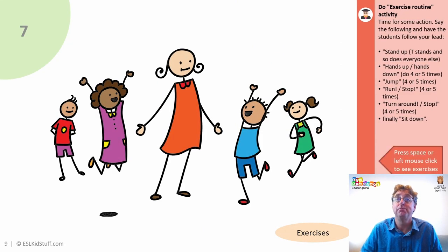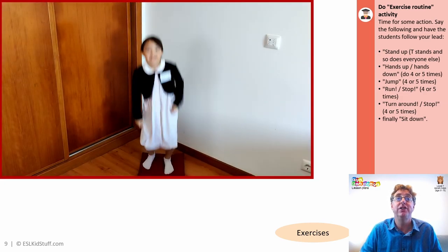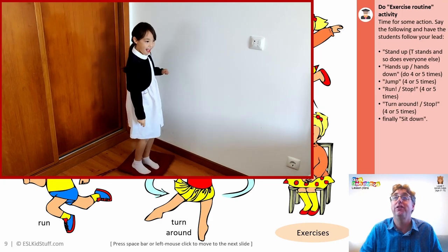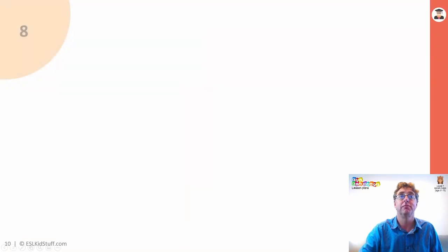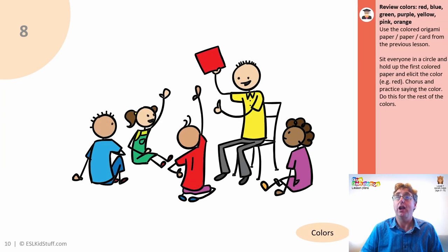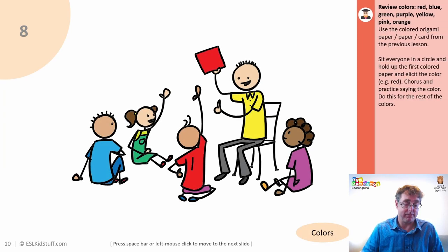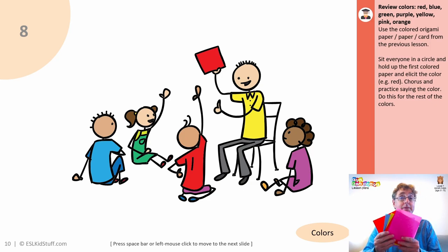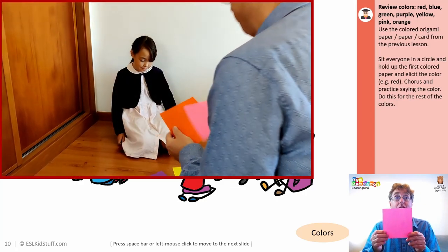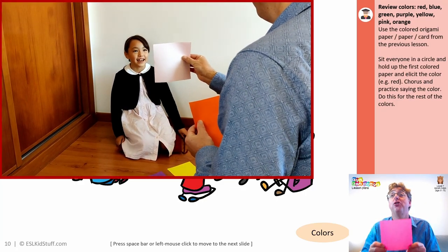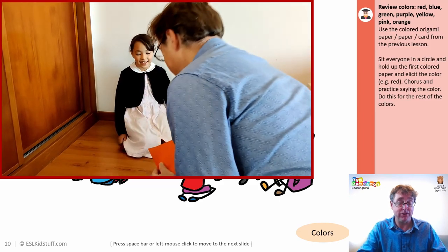Exercise routine again — get everyone standing up, jumping, turning around, hands up, hands down, running around to burn off a bit of excess energy. Then on to the colours. This is a review of the colours from last lesson. We've got all seven coloured pieces of paper and it's the same routine as usual: hold up one, ask what colour is it, elicit the colour, chorus the colour, then move on to the next.